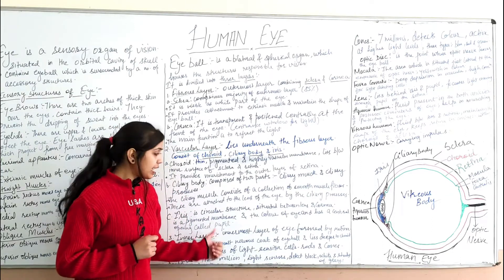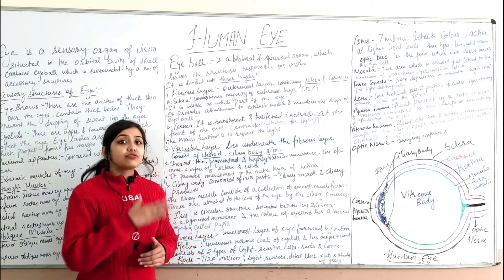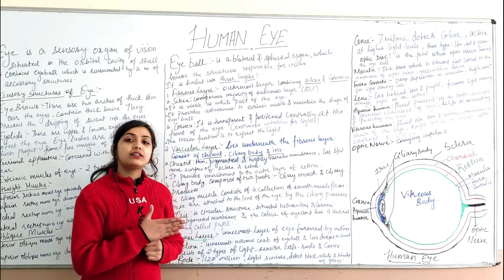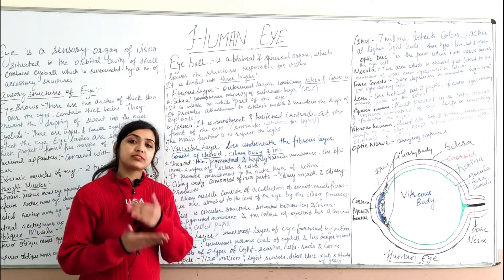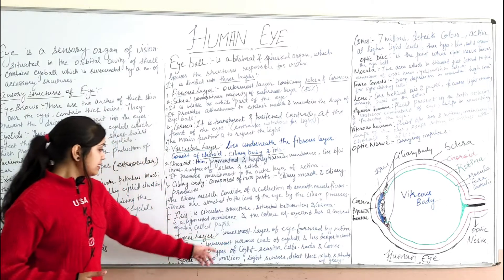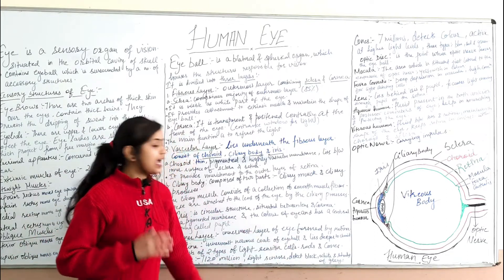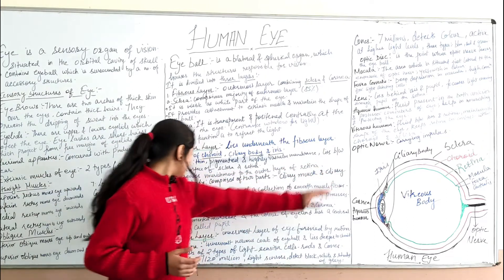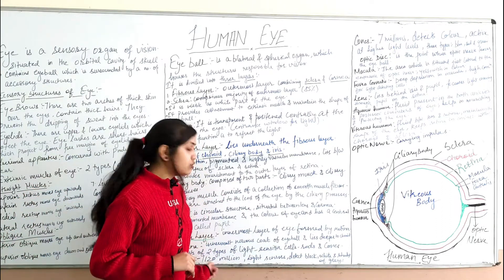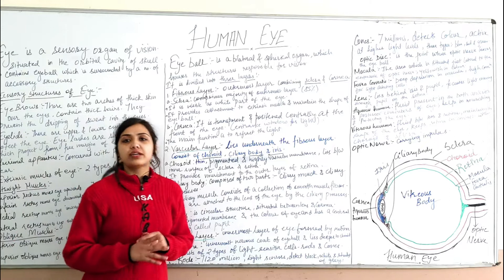The third and innermost layer of the eye is formed by the retina. When light enters the eye, the image is formed on the retina, making it the image formation site. The retina is the innermost nervous coat of the eyeball, lying deeper to the choroid layer, and it consists of photoreceptor cells known as rods and cones.